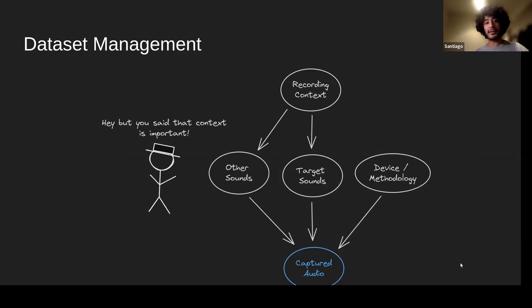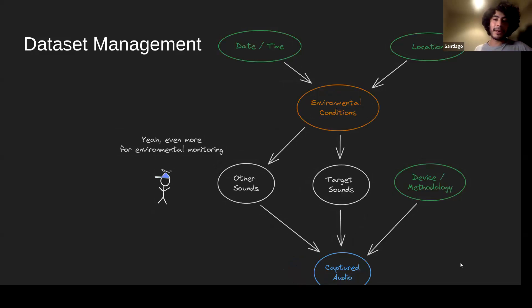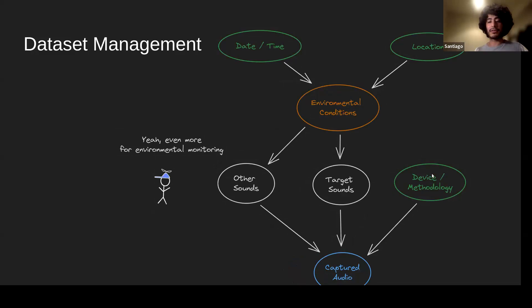It's important to record the recording context, since it provides so much information about whether our evaluation is complete or representative. For environmental recordings, recording context can be broken down into environmental conditions modulated by date, time, and location. In Wombat you can record date, time, location, device methodology, and environmental conditions if known. Wombat offers a tabular familiar view where you can edit metadata — columns for basic audio features like sample rate and duration, then recording context like date, time, and location encoded as latitude and longitude.